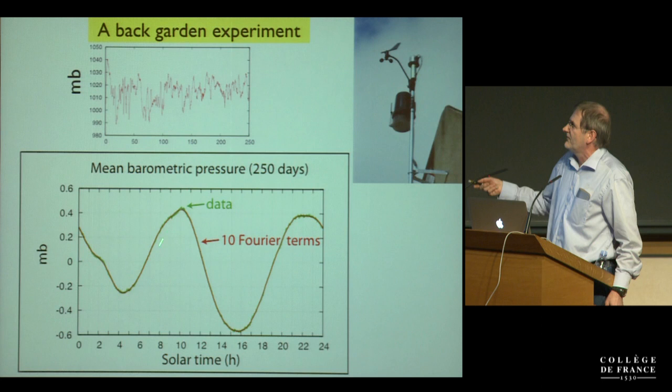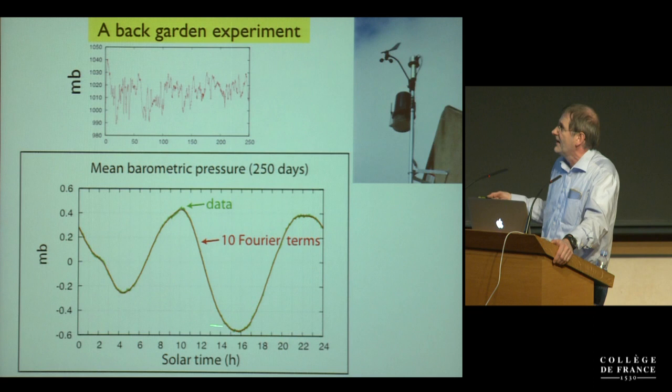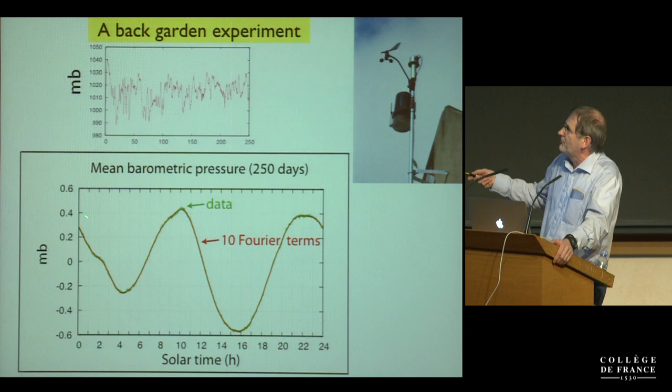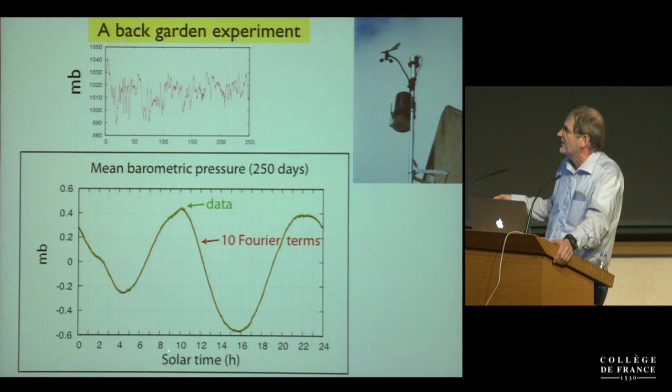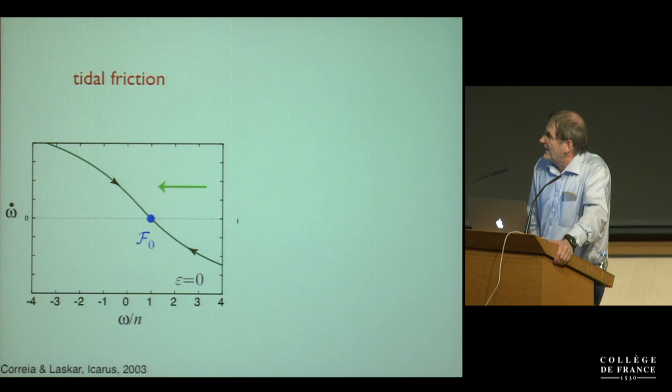But if you take the data recorded every minute and fold it over one solar day, all the random signal disappears and you are left only with the effect of the solar tide — about 0.4 millibar amplitude at this latitude. You can very clearly see the semi-diurnal amplitude, and importantly, this is offset with respect to the subsolar point at 12 hours. This offset creates the solar tides that drive the atmospheric torque.